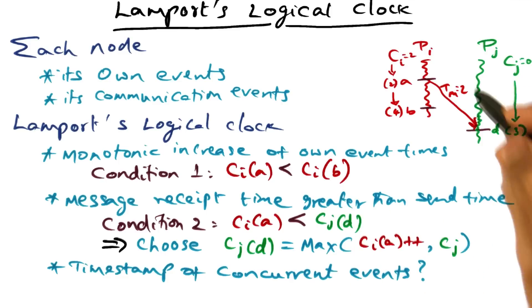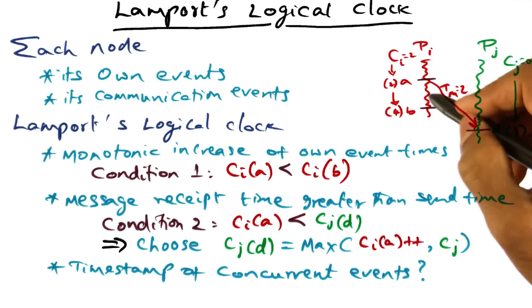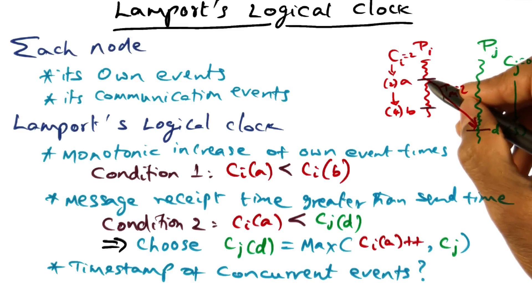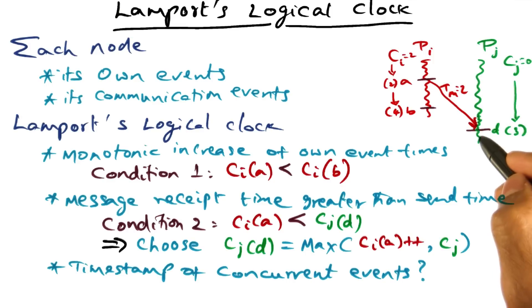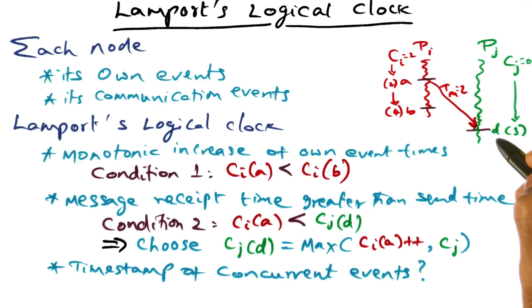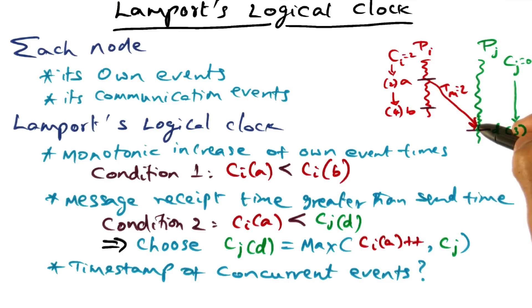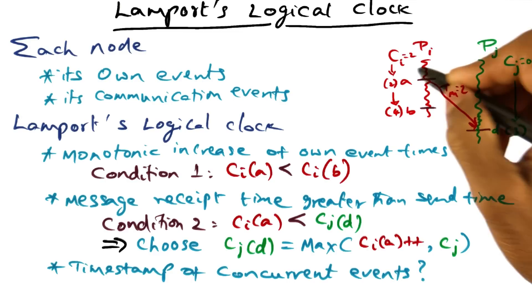Now what about communication events? A is a communication event on process PI, and it has a timestamp of 2 because that's when the message was sent. When it arrives at process PJ, that's an event — let's call it event D. We have to associate a timestamp with event D, and we know it has to be greater than the timestamp of the send event, because you cannot receive a message that has not been sent yet. So D must have a timestamp greater than A's timestamp of 2.